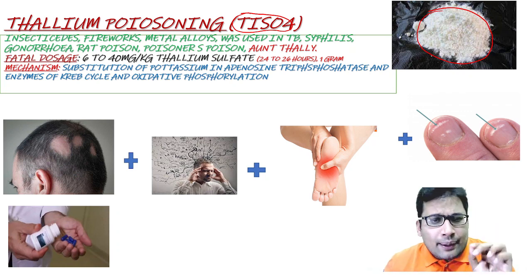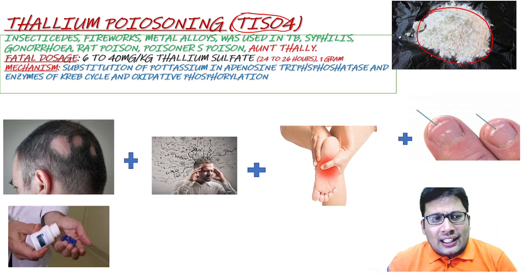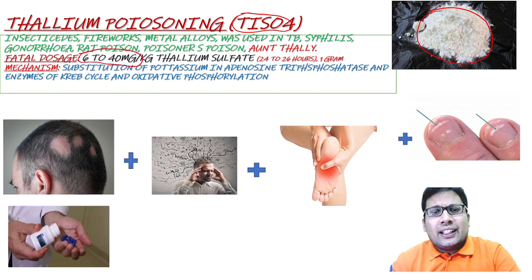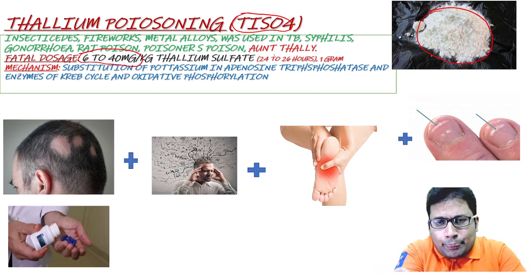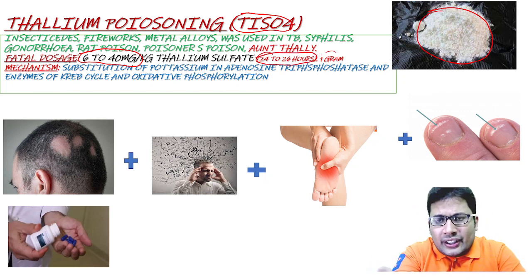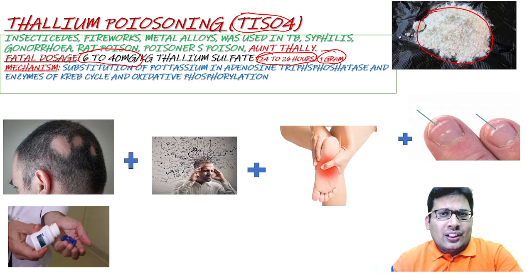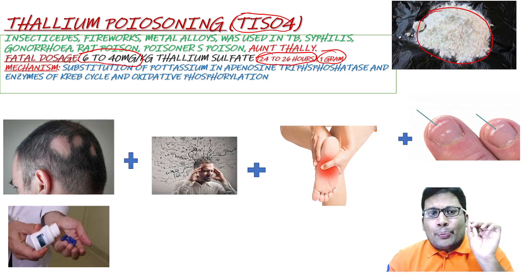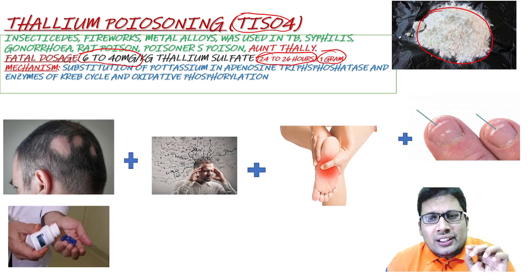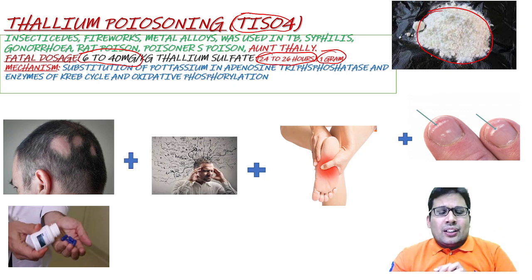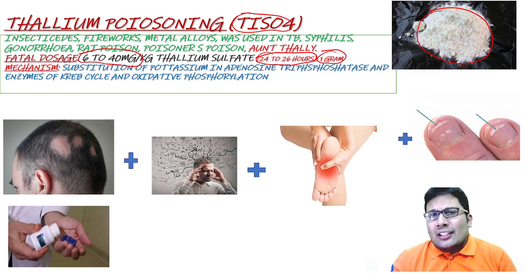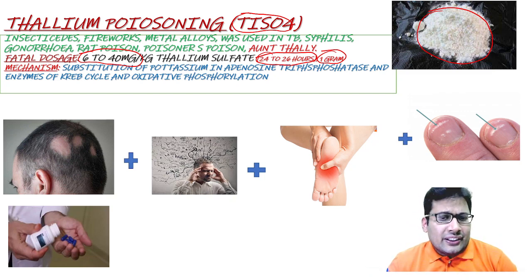The fatal dosage is 6 to 40 mg per kg body weight and the fatal period is 24 to 26 hours. One gram is generally the fatal dosage. The mechanism involves substitution of potassium, adenosine triphosphatase, and other enzymes in the Krebs cycle and oxidative phosphorylation, which leads to all the clinical features.